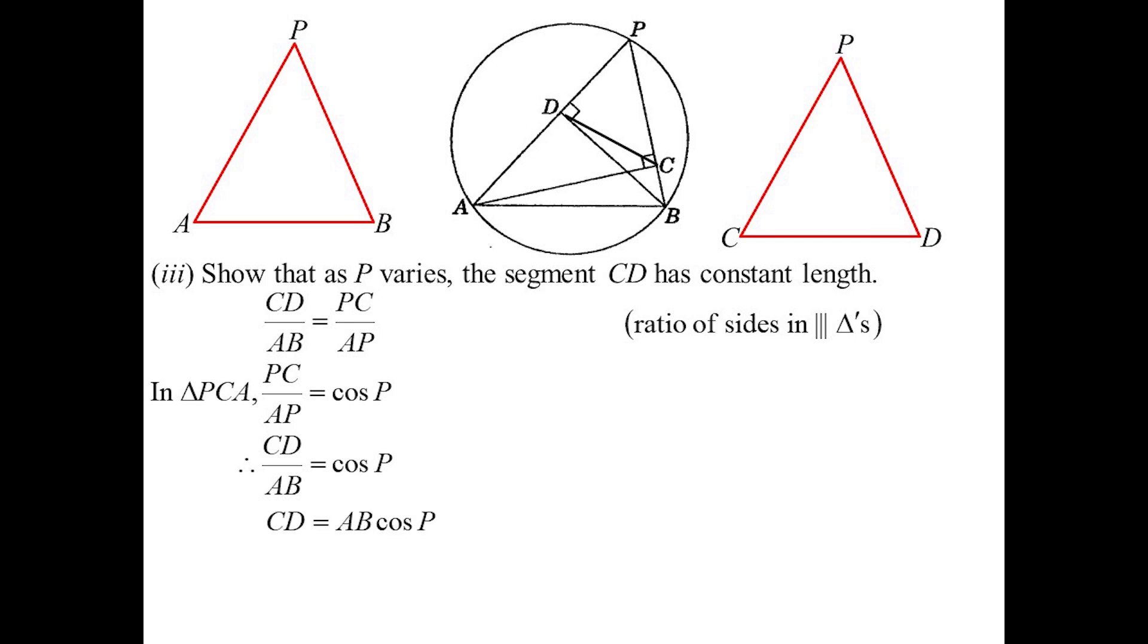So I now have the length of CD - I just got to prove or show that that's of constant value. Well, angle P is constant because no matter where I put it, it's going to be angle in the same segment, and AB they told me was constant. Therefore I'm multiplying two constants together, so yes, the length of CD must end up being of constant value.